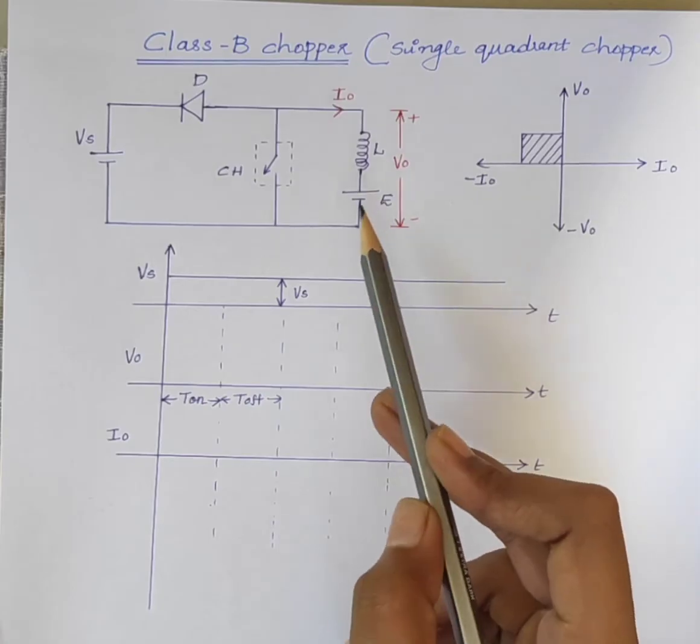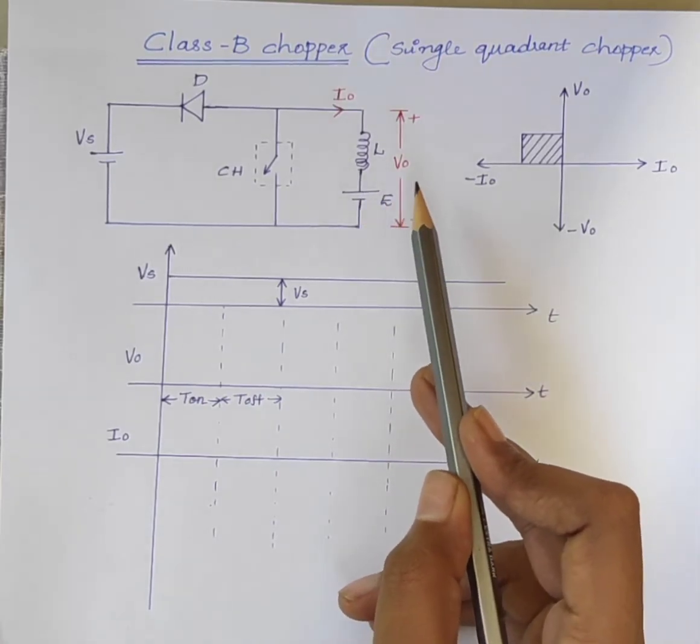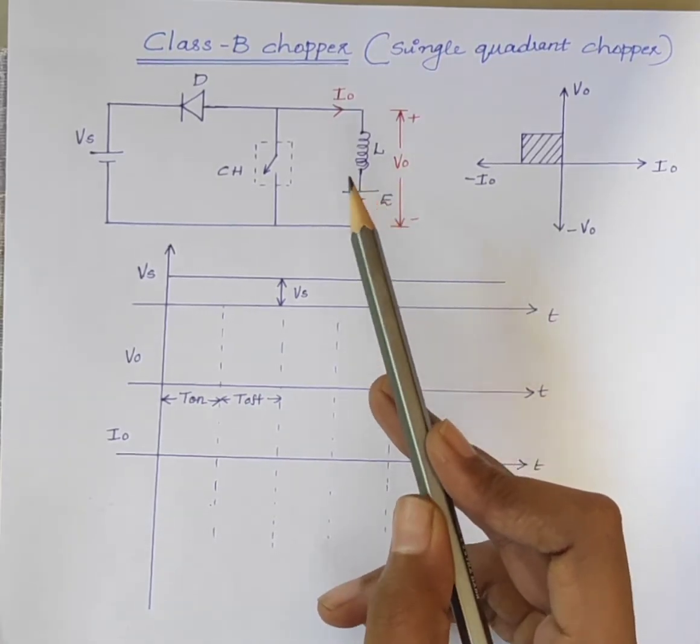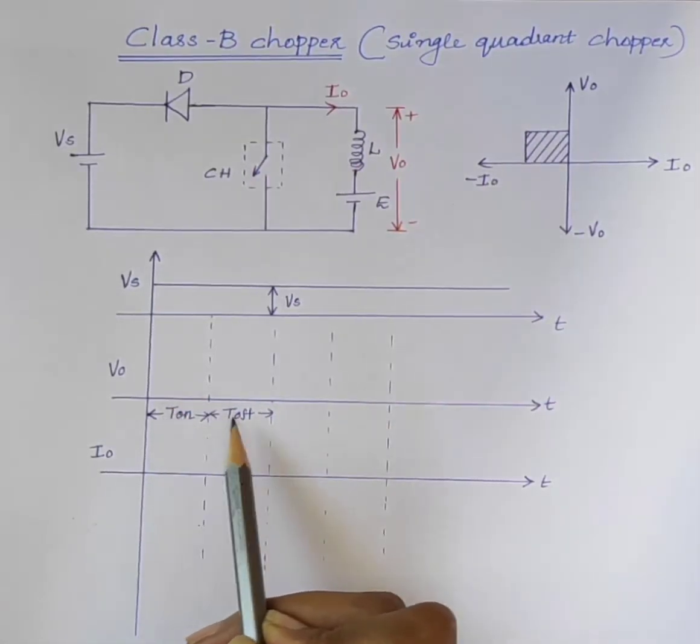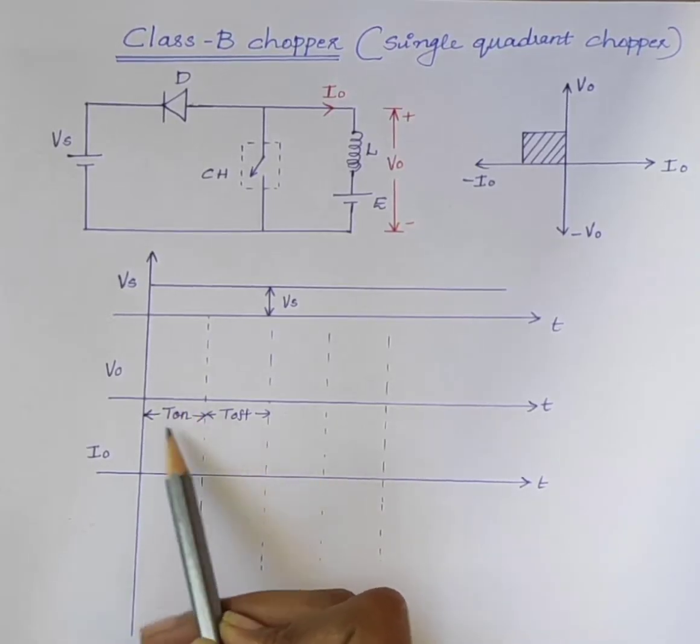Moving to the operation of class B chopper, consider the case when the chopper is on. That is during the on time, Ton.